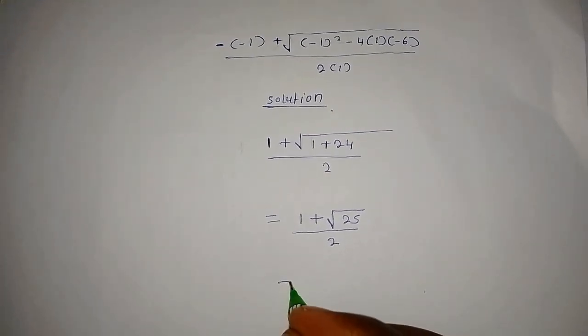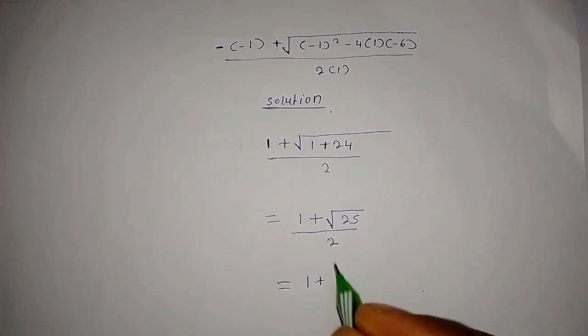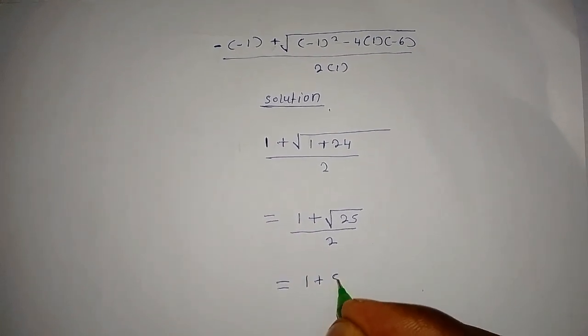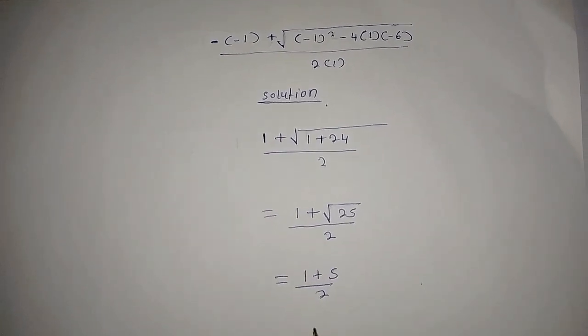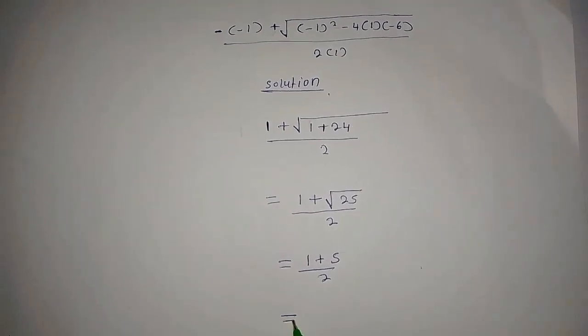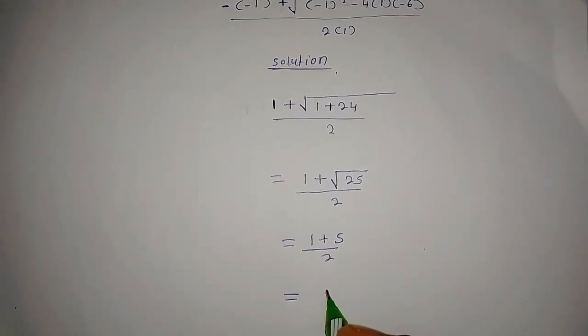Then the next thing, 1 plus the square root of 25 is 5, divided by 2. Then 1 plus 5, you are going to get 6.